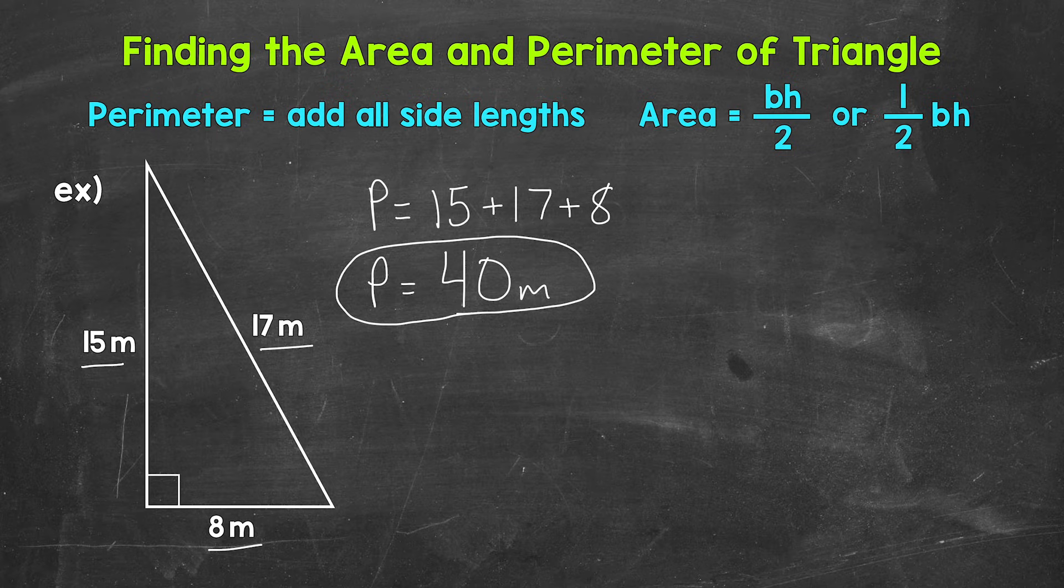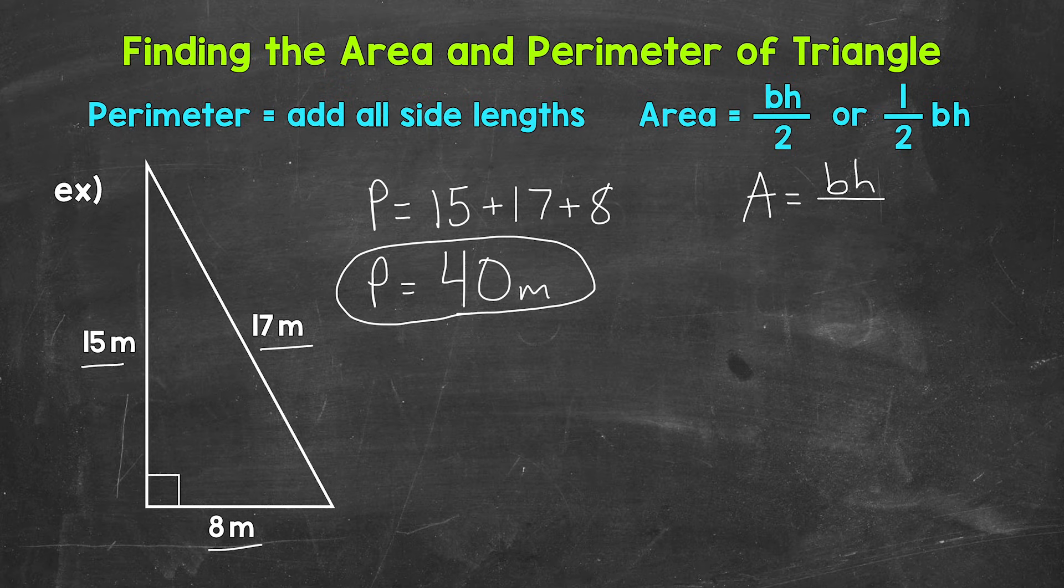Now we can move on to finding the area of this triangle, and we can start by writing out the formula. So area equals base times height divided by 2. Let's plug in the base and height now.